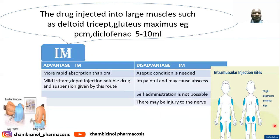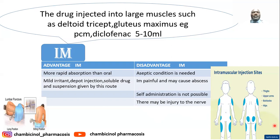The advantages of intramuscular administration: more rapid absorption than oral. It can be used for mildly irritant drugs — in comparison to subcutaneous, where the drug should not be irritant. It is suitable for depot and oil-based (lipid-soluble) drug preparations, not for aqueous-soluble drugs.